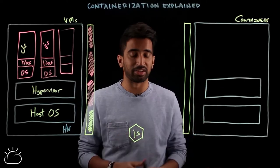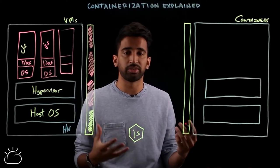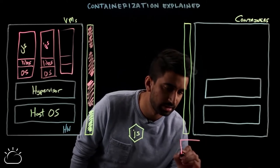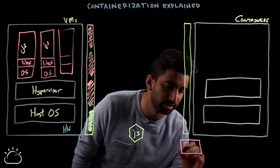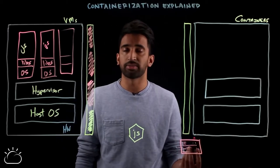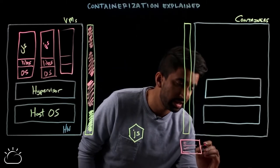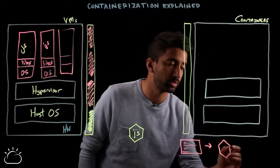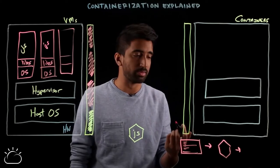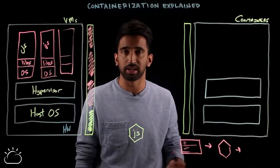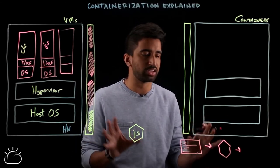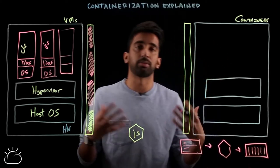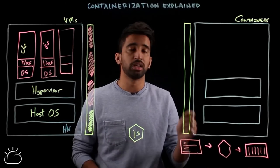That problem is solved when you use containers. There's a three-step process for creating and pushing containers. It almost always starts with some sort of manifest — something that describes the container itself. In the Docker world this would be a Dockerfile; in Cloud Foundry, a manifest.yaml. Next, you create the actual image — a Docker image, or with Rocket, an ACI or application container image. Finally, you end up with an actual container that contains all of the runtimes, libraries, and binaries needed to run an application.